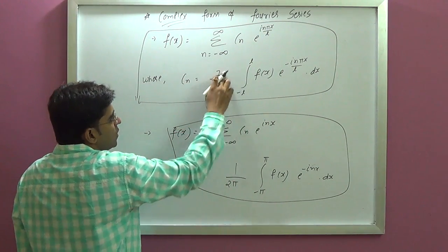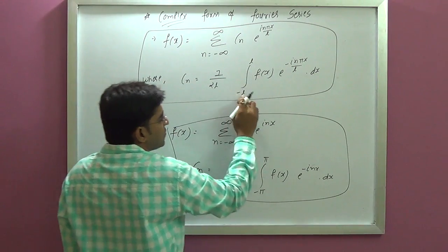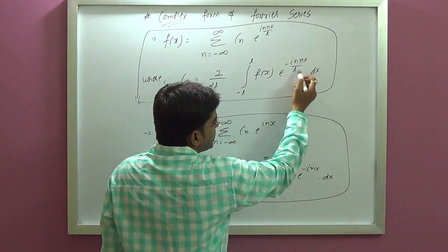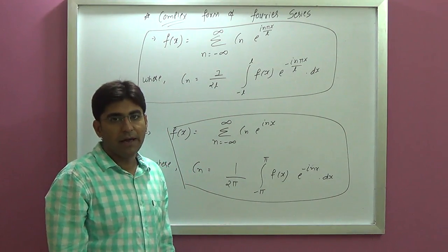Where cn is equal to 1 upon 2 l, integration minus l to l, f of x e raise to minus i n pi x by l into dx.